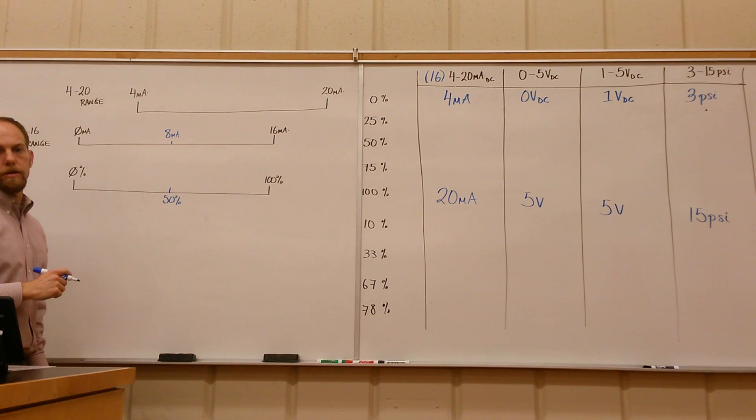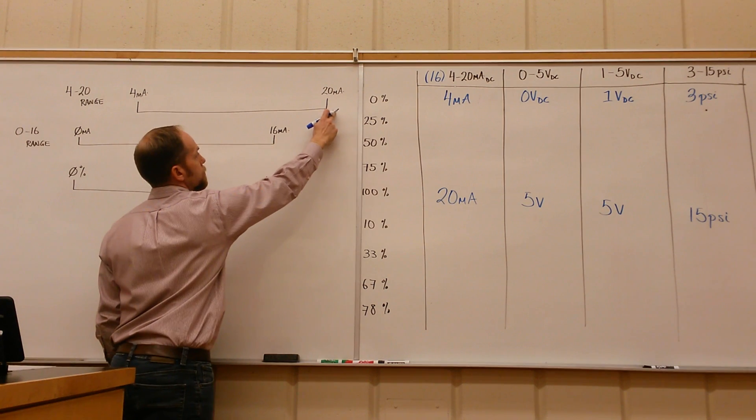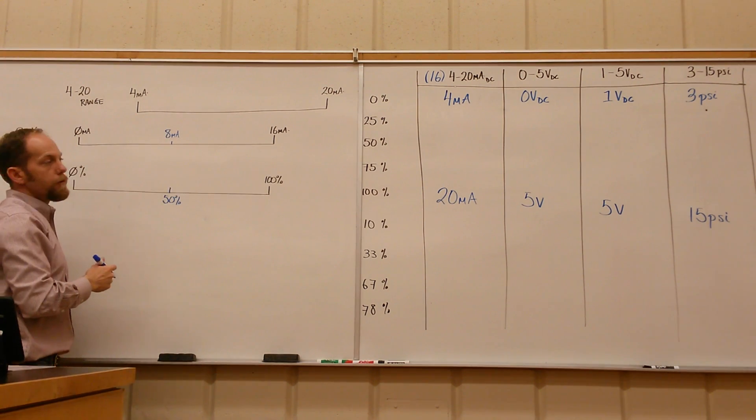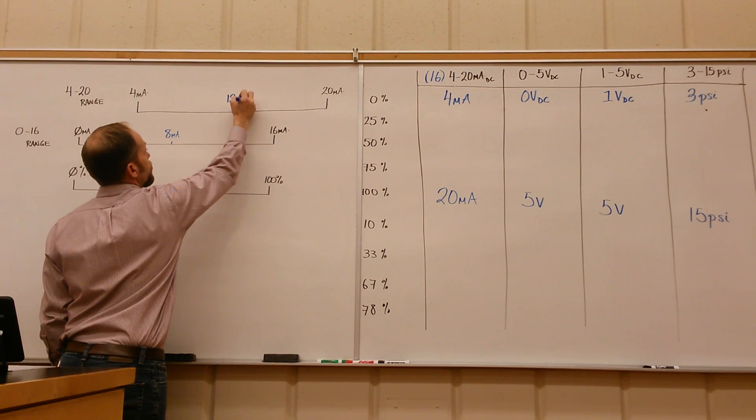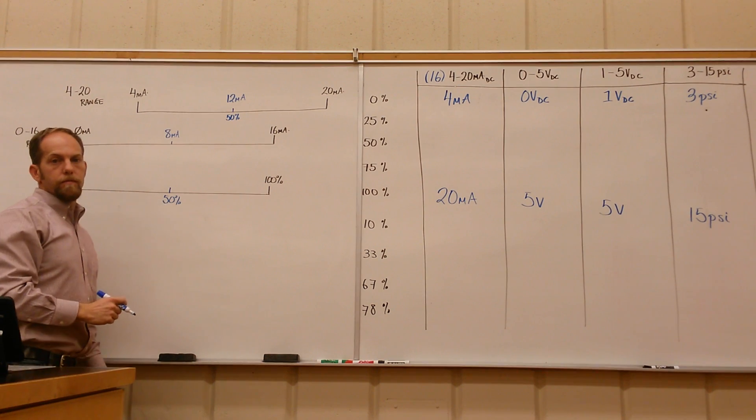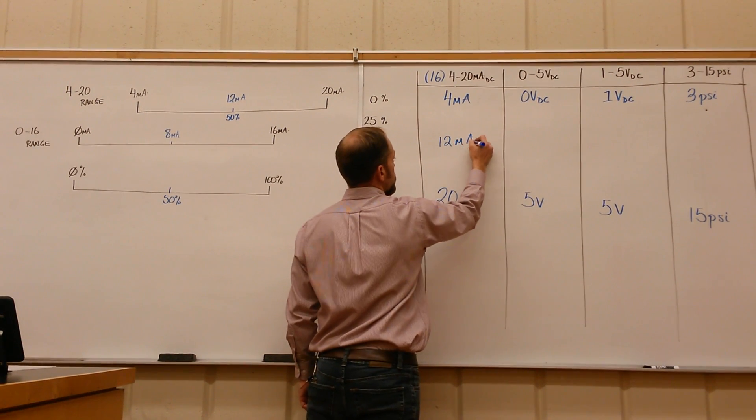So if you try to find the percentage here, 50% of your 20 milliamps gives you 10 milliamps, which is not 50% of that range. What you have to do is bump everything down by 4. If we take 50% of the 0 to 16 range, that would be 8 milliamps. Everything bumps up by 4, so 8 plus 4 gives us 12 milliamps corresponding to 50%.